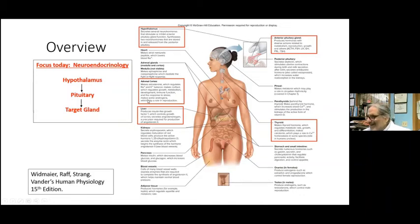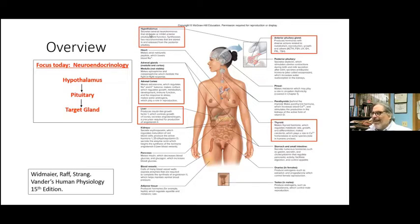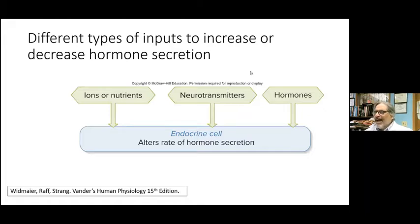Endocrine glands also make secretory products, but the classic definition is they go directly into the blood. There's a whole lot of endocrine glands, and there's no way I could do all of them justice in this 50-minute session. So I decided today to focus on neuroendocrinology — the hypothalamus, the pituitary, and target glands. What are the different types of input to increase or decrease hormone secretion? Because after all, the definition of physiology is homeostasis — to keep things as steady as possible when you're faced with an environmental stressor.